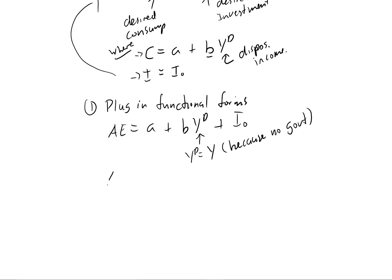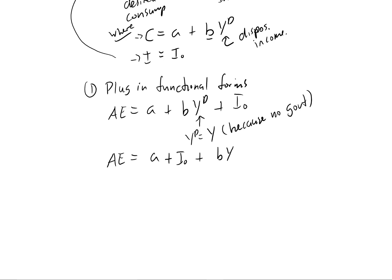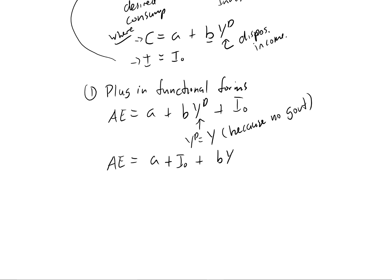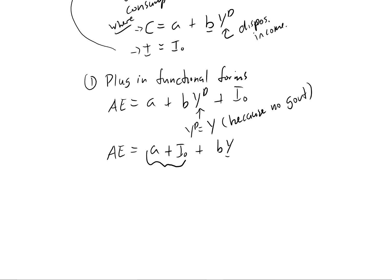So now we're just left with AE equals A plus I zero plus B times Y. And so a lot of times you'll see anything that's not multiplied by Y, so here the A and the I zero, we're going to denote that capital A. And that's just going to be desired autonomous spending.